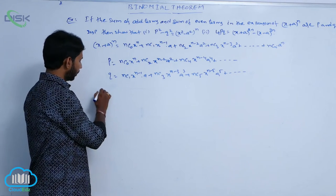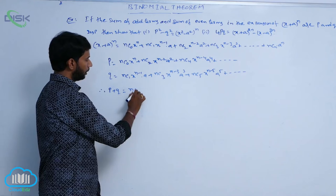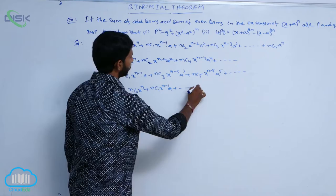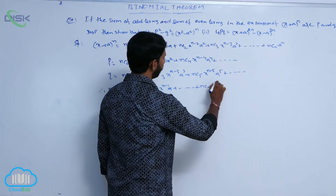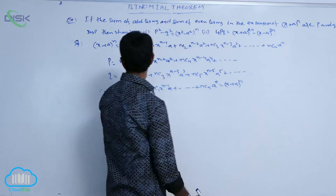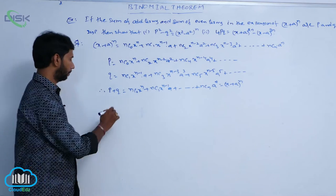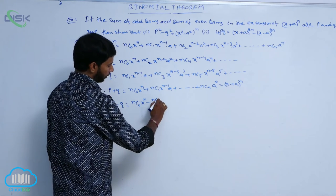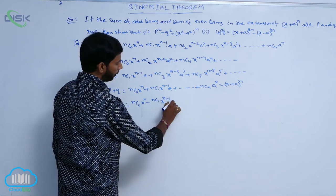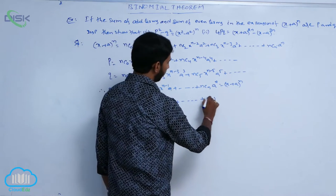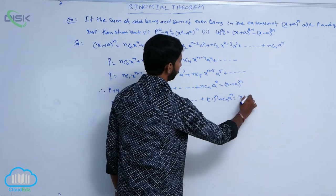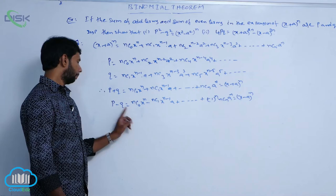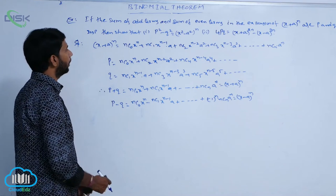Therefore, p + q = nC0 * x^n + nC1 * x^(n-1) * a + and so on, which equals (x + a)^n. And p - q = nC0 * x^n - nC1 * x^(n-1) * a + and so on + (-1)^n * a^n, which equals (x - a)^n. So p + q = (x + a)^n and p - q = (x - a)^n.